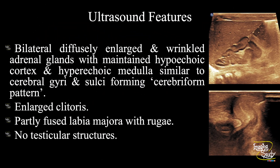In summary: there are bilateral diffusely enlarged and wrinkled adrenal glands with maintained hypoechoic cortex and hyperechoic medulla, forming the cerebriform pattern. There was partly fused labia majora with rugae, which is a clinical examination finding noted before the ultrasound. We could not find any testicular structures within those scrotum-like labial parts. These features are consistent with a diagnosis of congenital adrenal hyperplasia.